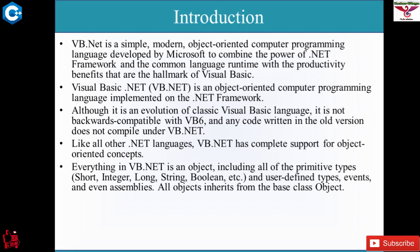An object is a runtime entity used to access the properties of a class. It creates memory at runtime for the data members of the class. In VB.NET, all types of values, classes, and methods are in the form of objects. Even primitive data types such as Integer, Short, Long, Character, String, and Boolean are used in the form of objects.